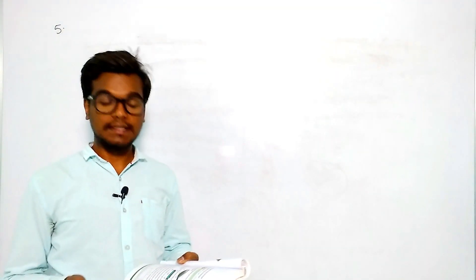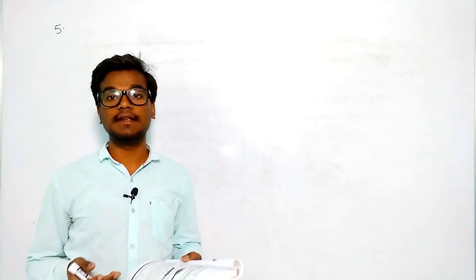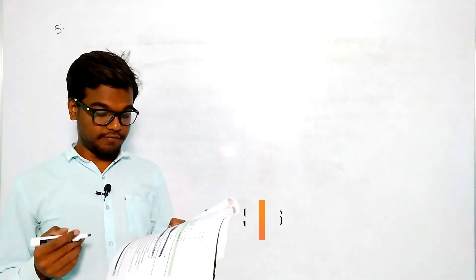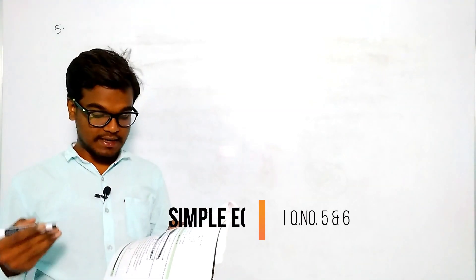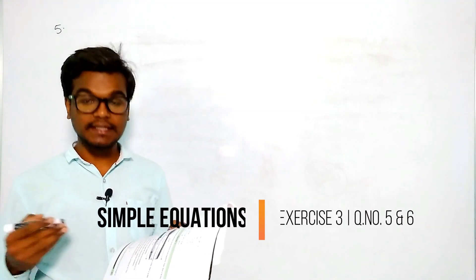Hello viewers, in this module I am going to discuss the fifth question in exercise 3 on simple equations. Our fifth question is: find a number which when multiplied by 7 and then reduced by 3 is equal to 53.